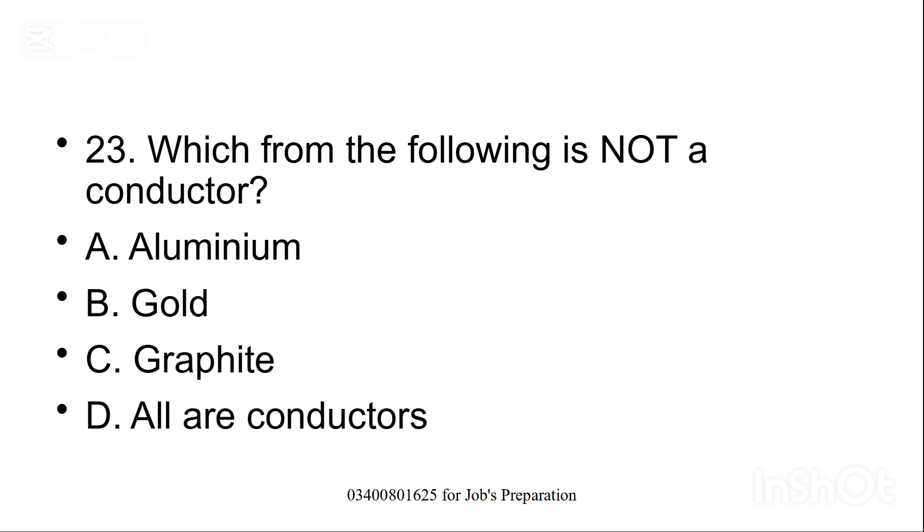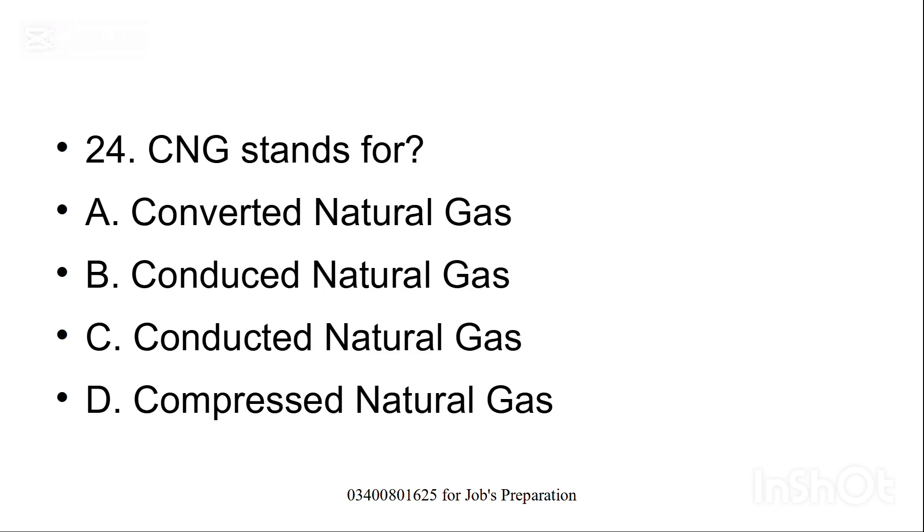Which of the following is not a conductor? In mein se kaunsa conductor nahi hai? A: Aluminium, B: Gold, C: Graphite, D: All are conductors. D, all are conductors is the right option because these all are conductors. Some are poor conductors, some are bad conductors, but they all are conductors. CNG stands for, CNG ka full form kya hai? Compressed Natural Gas, option D is the correct option.